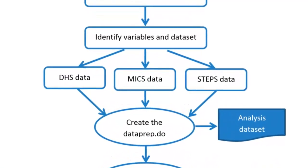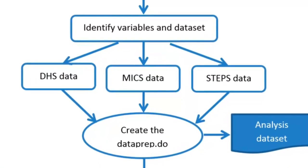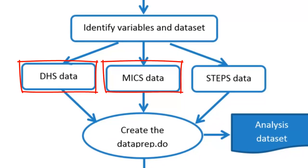Many of these surveys are conducted on a regular basis across multiple countries, including the Demographic and Health Surveys supported by USAID, the Multiple Indicator Cluster Surveys supported by UNICEF, and the STEPS Survey on chronic disease supported by the World Health Organization, to name a few. Once you know which variables you need and the time frame and geographic coverage of your research question, it will be straightforward to identify which existing survey dataset is best suited for your research.